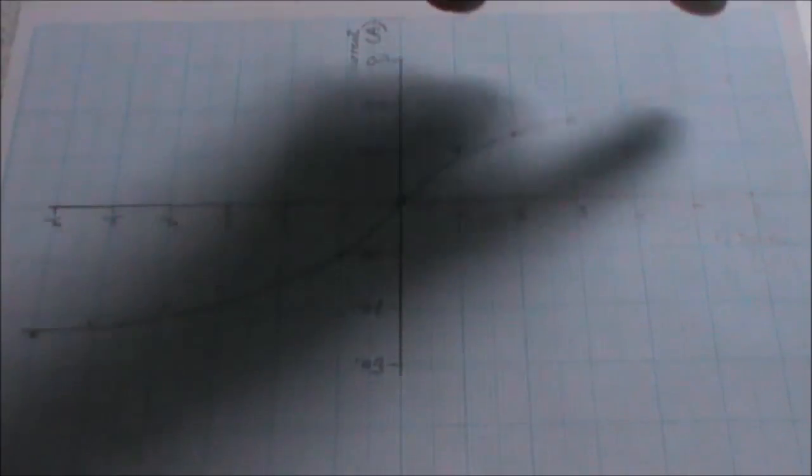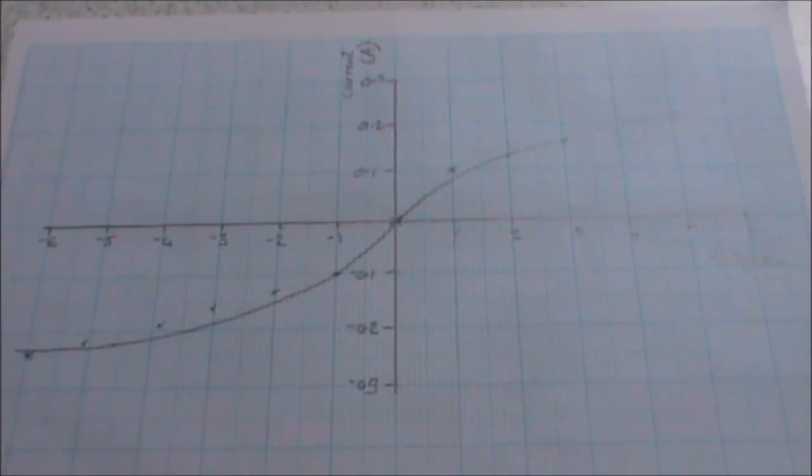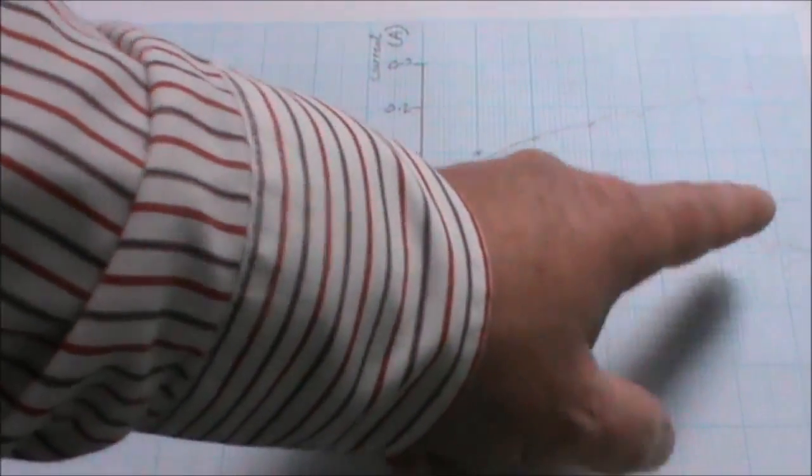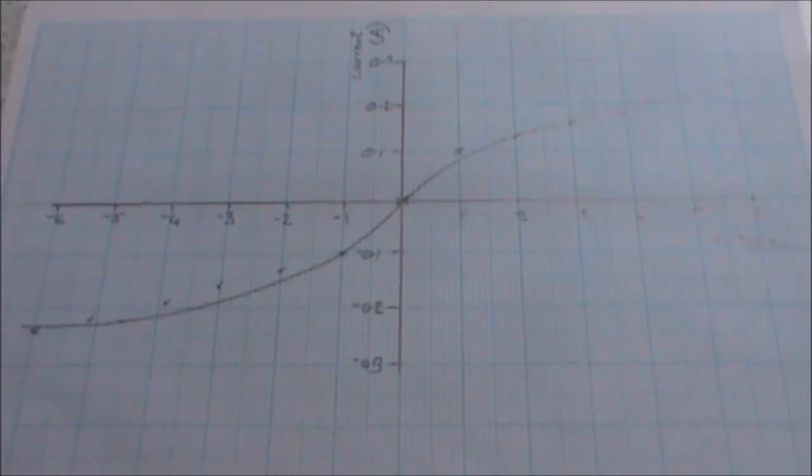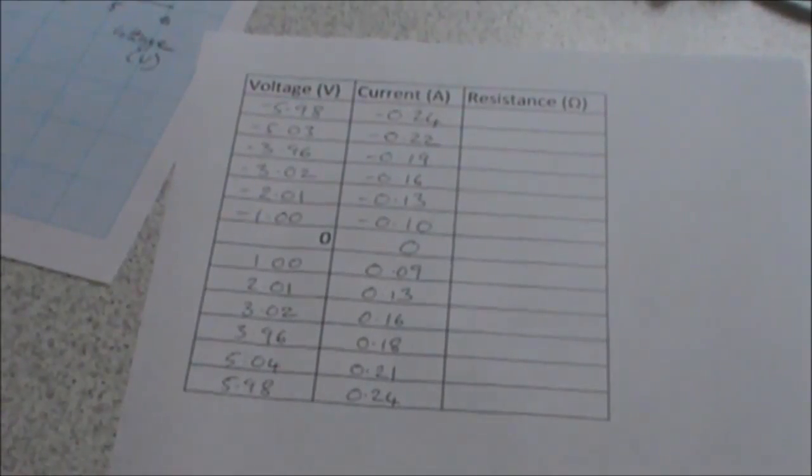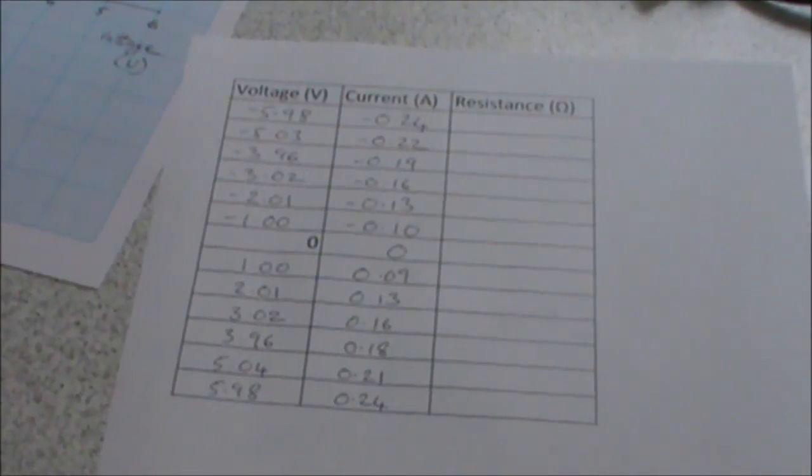This is the characteristic graph for a non-ohmic filament lamp conductor. If we look at the graph, we can see that we have a curve. This tells us that the resistance is constantly changing. Now the resistance changes as the voltage increases. The resistance goes up because the temperature of the bulb also increases. Now using Ohm's law, you can calculate the resistance for every stage of this experiment.